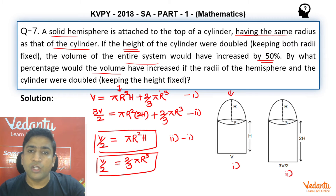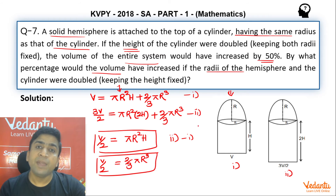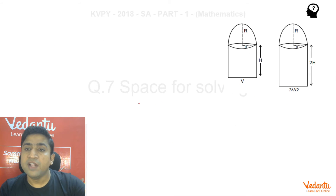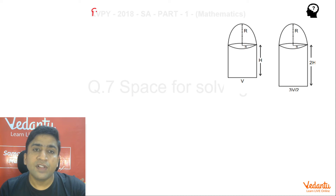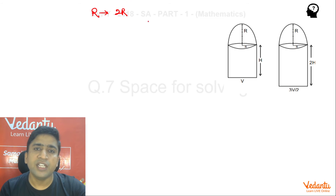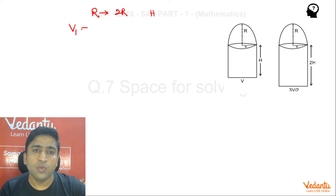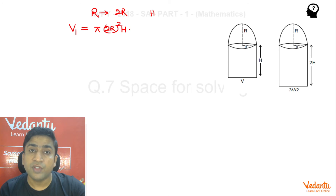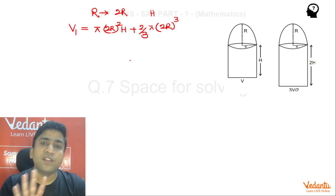Now the question asks: what percentage would the volume have increased if the radii of the hemisphere and the cylinder were doubled, keeping the height fixed? So if I increase the radius from r to 2r for both the solid hemisphere and the cylinder, keeping h as it is, the new volume V1 is: π(2r)²h for the cylinder plus (2/3)π(2r)³ for the hemisphere.